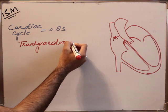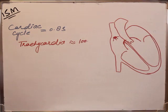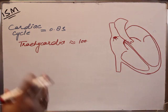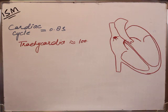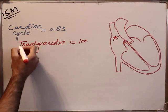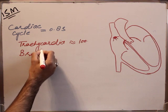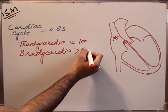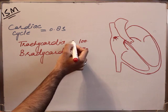In tachycardia, the heart rate increases, approximately 100 or more than 100. In certain conditions like negative chronotropic effects, or under the action of certain drugs such as lidocaine or xylocaine, which are responsible for lowering the heartbeat, or when the generation of impulse from the sinoatrial node decreases, the heart rate decreases. That condition is called bradycardia, in which the heart rate is less than 50.